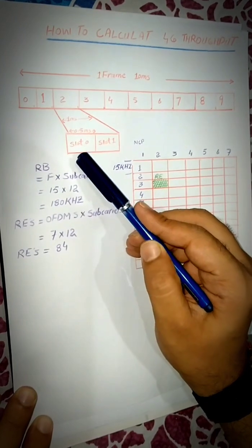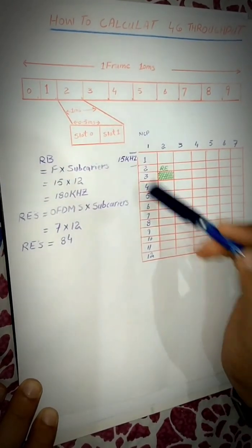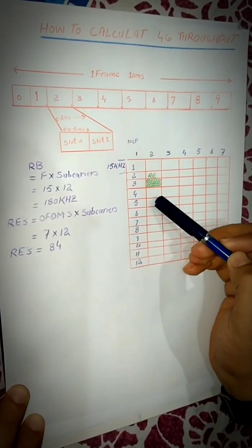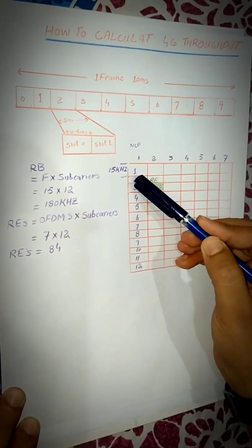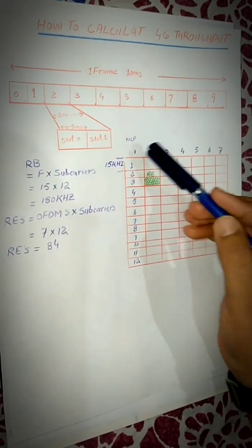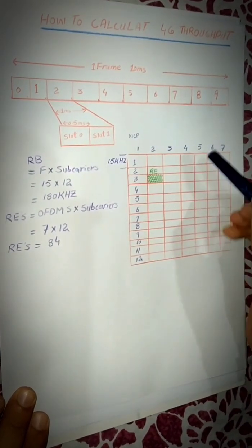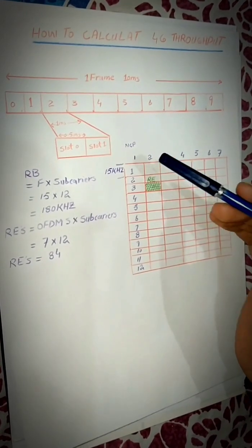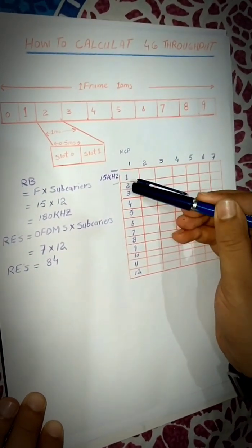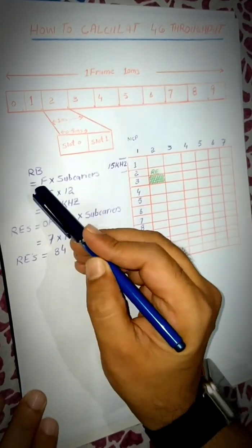If we further explore one slot — let's say we expand slot 0 in this frame structure — this represents one RB. Inside one RB, there are seven OFDM symbols if we are talking about normal CP. If we consider extended CP, then there are six OFDM symbols. For normal CP, there are seven OFDM symbols and 12 subcarriers in the frequency domain.